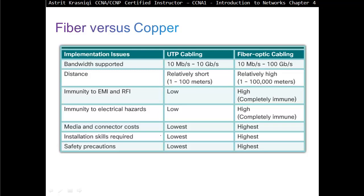Fiber optic versus copper cable: Bandwidth — UTP supports 10 Mbps up to 10 Gbps; fiber supports 100 Gbps. Distance — UTP is relatively short, 1 to 100 meters; fiber is relatively long, up to 100,000 meters. Immunity to EMI and RFI — very low for copper, very high or completely immune for fiber. Immunity to electrical hazard — low for UTP, completely immune for fiber. Media and connector cost — very low for UTP, very high for fiber. Installation skills required — low for UTP, very high for fiber — months of training. Safety precautions — very low for UTP, and for fiber you must be very careful: if one end of a fiber optic cable is connected and you look directly into the other end with your eye, it will blind you.